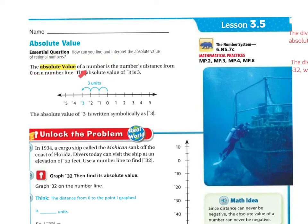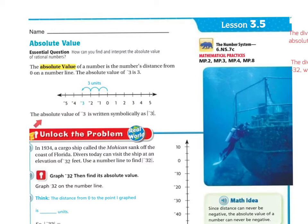The absolute value of a number is the number's distance from 0 on the number line. The absolute value of negative 3 is 3. You're simply looking at the 0 — whatever the distance is from the number line, whether it's negative or positive, is its absolute value. The absolute value of negative 3 is written symbolically like this.